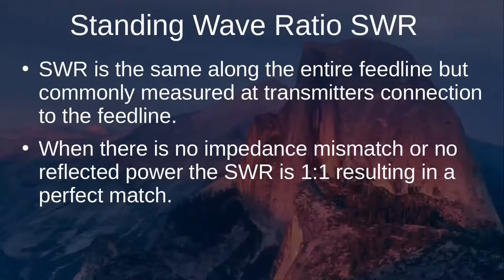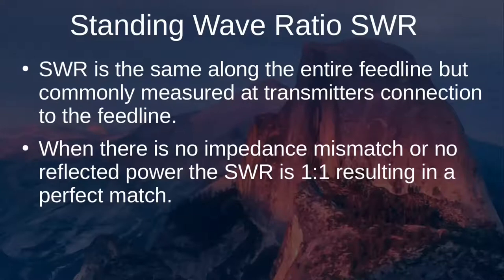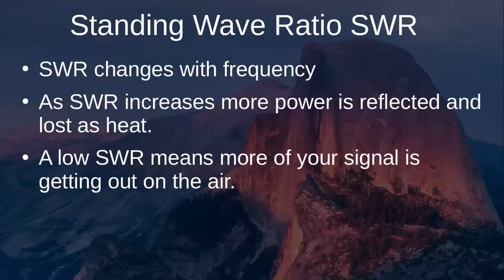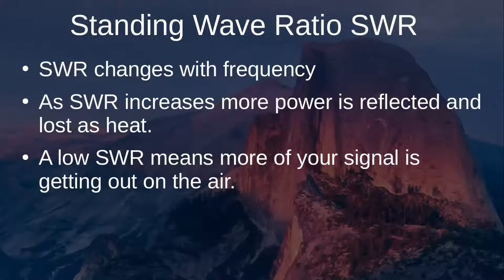SWR is the same along the entire feed line but is commonly measured at the transmitter's connection to the feed line. When there is no impedance mismatch or no reflected power, the SWR is one-to-one, resulting in a perfect match. SWR can change with frequency. As SWR increases, more power is reflected and lost as heat, so a high SWR is not desired. A low SWR means more of your signal is getting out — generally 1.5:1 to 2:1 is considered acceptable.